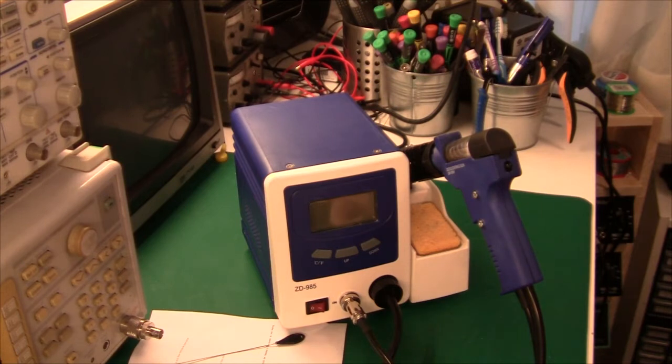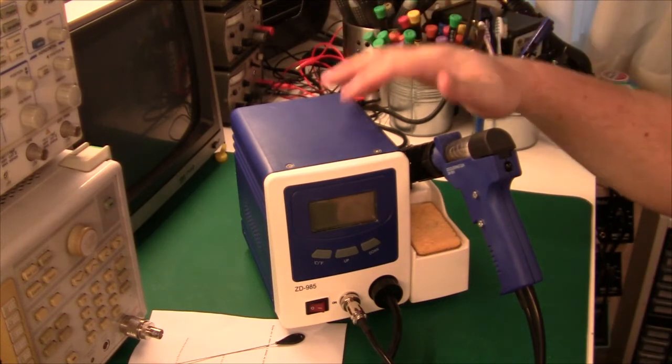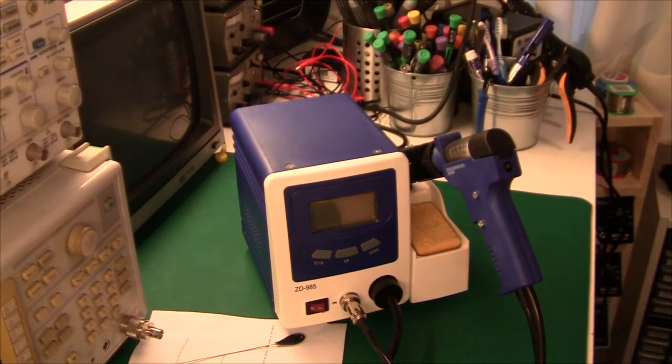But of course, this can be fixed by removing it from the PCB and dipping it in lacquer. But I think I can live with that. I'm not going to use this desoldering gun that often, so I'll just leave that as it is.